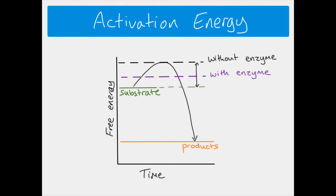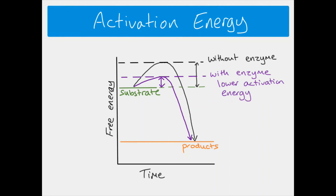With an enzyme, the activation energy is lower. Enzymes hold the substrate in a particular way so that less energy is needed to turn it into products — a smaller input of energy is needed before the reaction can take place. Because less energy is needed, it's more likely that the reaction is going to happen, and therefore the reaction happens more rapidly. That's why reactions take place much faster with enzymes — because they lower the activation energy required for the reaction.